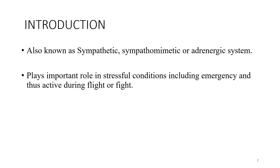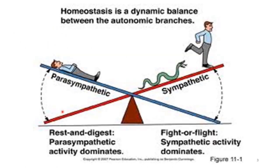The adrenergic system plays an important role in stressful conditions, including emergencies, and is thus active during the fight-or-flight response. The parasympathetic and sympathetic systems balance our body. During rest and digest, parasympathetic activity is dominant. When you are in fight-or-flight mode, sympathetic activity is dominant.